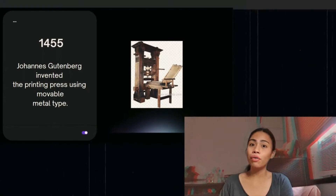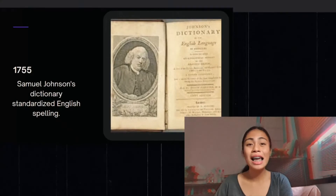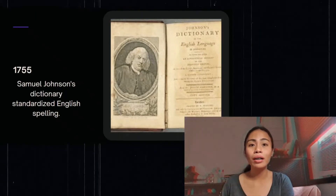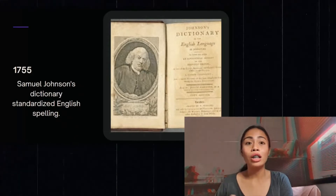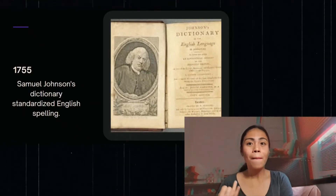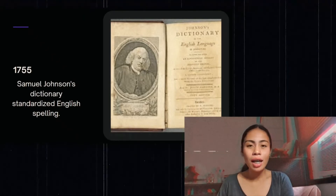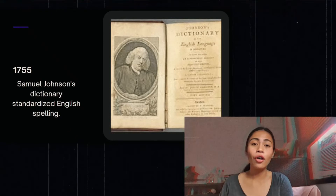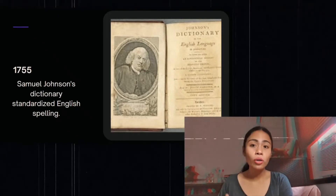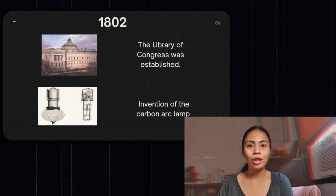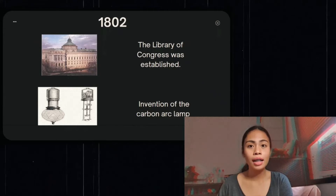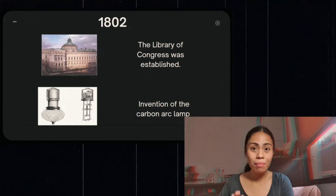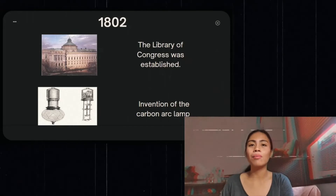In 1755, Samuel Johnson's dictionary standardized English spelling. His dictionary was the first to make an effort to standardize the spelling of words, illustrating meanings by literary quotation from authors like Shakespeare, Milton, and Dryden. Johnson also added notes on a word's usage rather than being simply descriptive, unlike other dictionaries of that time. In 1882, the Library of Congress was established — the de facto National Library of the United States and now the largest library in the world — and also that same year, the Carbon Arc Lamp was invented.